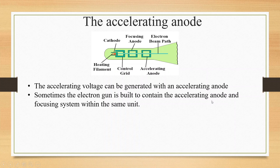The Accelerating Anode and Focusing System are combined into the same unit. This plate is the accelerating anode. When the electron beam passes through it, the voltage here increases the speed of the electron beam.